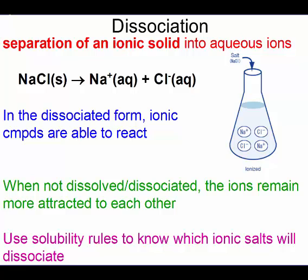A dissociation equation starts with a solid and it breaks apart into those two ions. Notice that in solution, I have ions — I do not have any NaCl molecules together. It's going to keep breaking them apart until the solution is saturated. When they're not dissolved or dissociated, the ions remain more attracted to each other. If I add a ton of sodium chloride into the solution, I may have some solid that goes to the bottom and stays together.